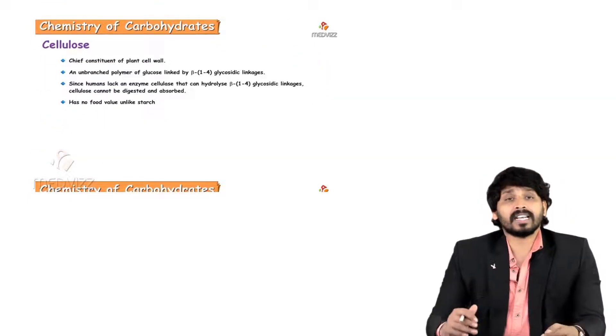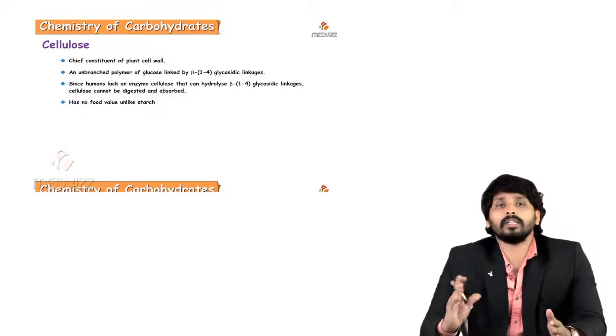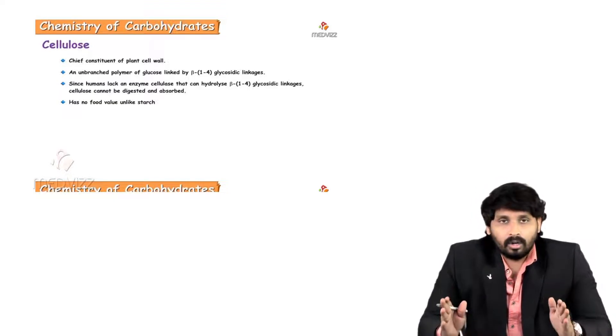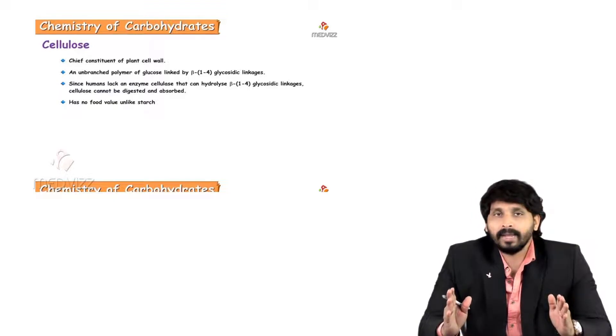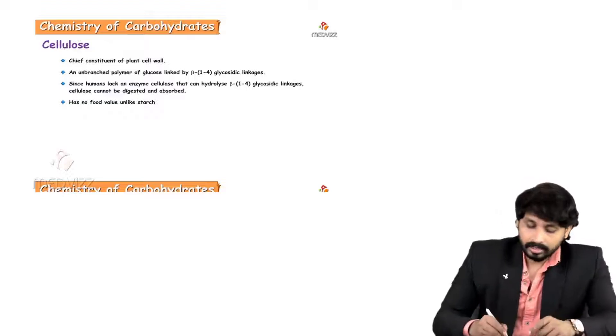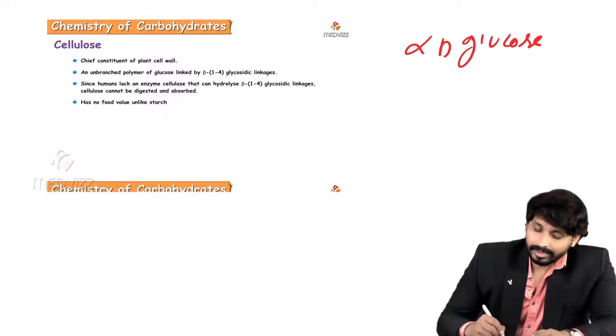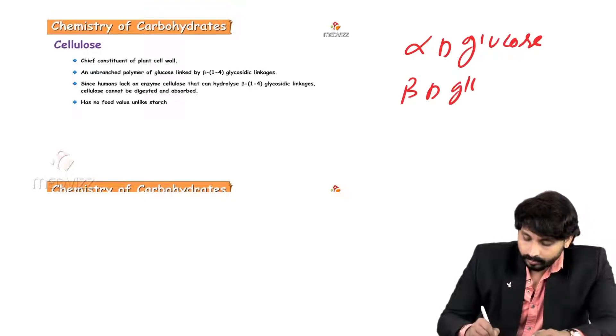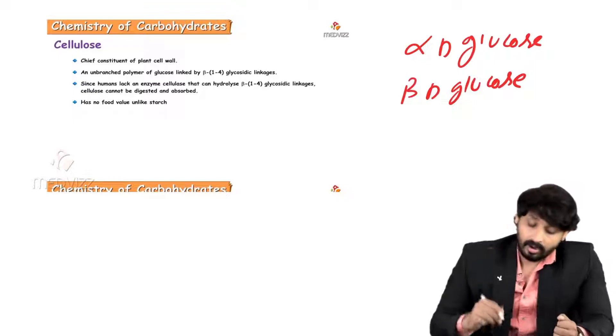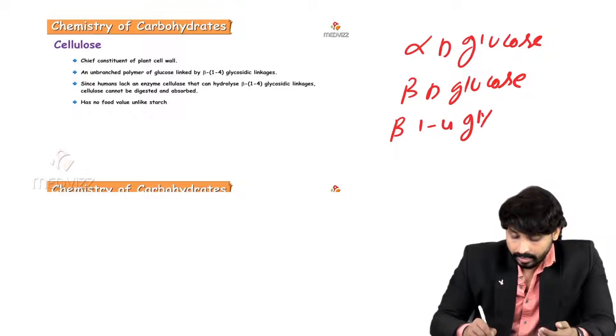The next homopolysaccharide to discuss is cellulose. Because we cannot digest cellulose, but it does have other physiological significance. The main source of cellulose is plant cell wall. The plant cell wall is made by cellulose. What is the difference between starch and cellulose? Starch is made up of alpha-D glucose and cellulose is made up of beta-D glucose. That is the only difference. The linkage is beta-1,4. All the glucose in cellulose are linked by beta-1,4 glycosidic linkage.